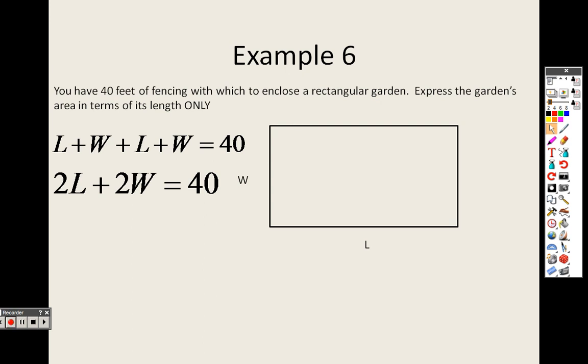So they said they want to express this area in terms of length, which means I'm looking to get length by itself. So I'm going to, since it's plus 2 w, I'm going to subtract 2 w on both sides. So when I do that, I end up with 2 l equals 40 minus 2 w.